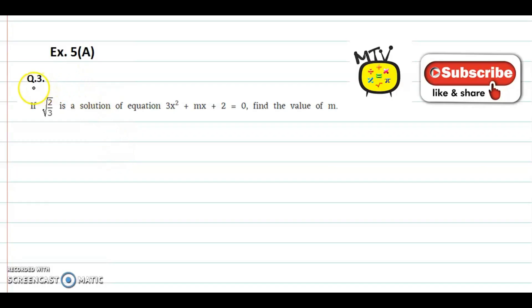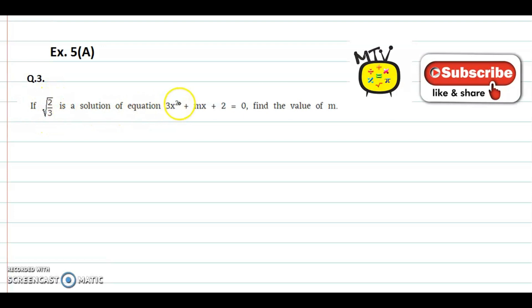We now discuss question number 3 from exercise 5a. The question is: if root of 2 by 3 is a solution of the equation 3x squared plus mx plus 2 equal to 0, find the value of m.